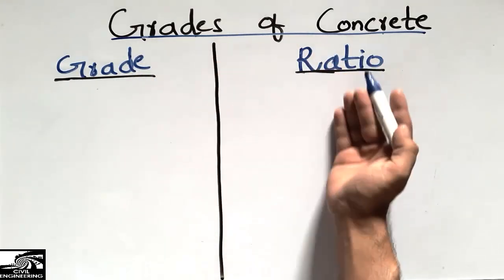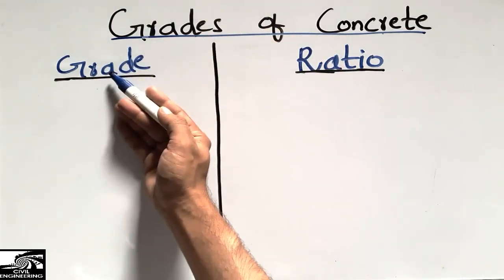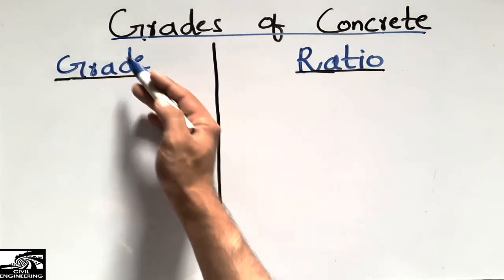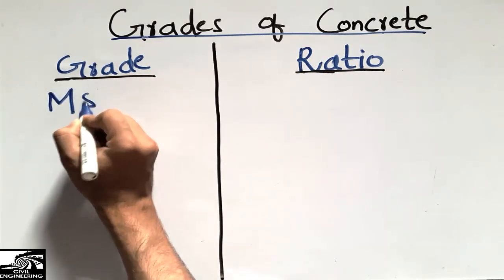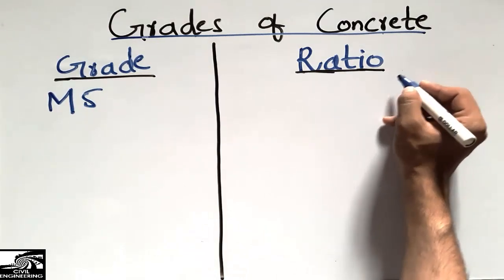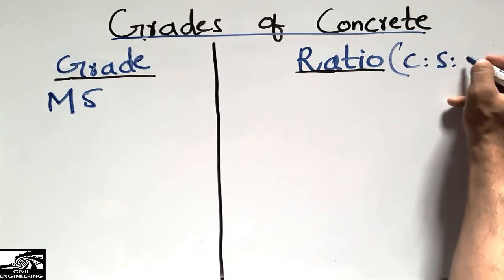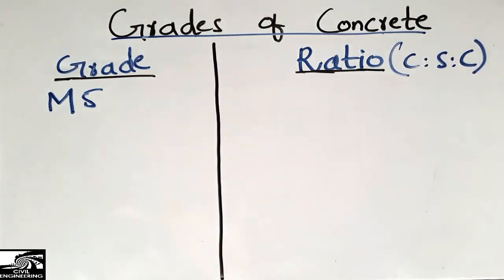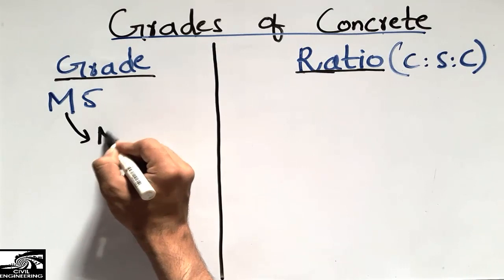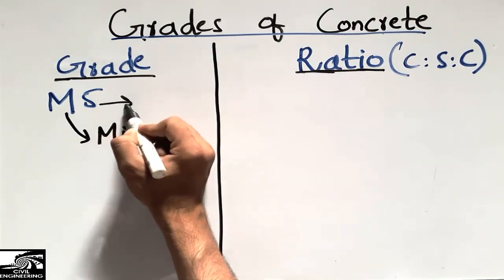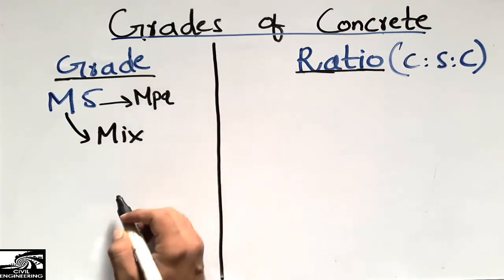We will also cover the different ratios of concrete — how the ratio of concrete changes with the grades. Grade of concrete means the strength of concrete. Starting from the first grade, M5 — there are three types of materials used: cement, sand, and coarse aggregate. M5 stands for the concrete mix, while the five represents the strength of the concrete in units of megapascals.